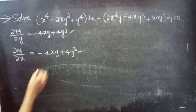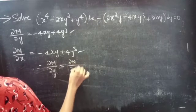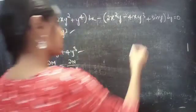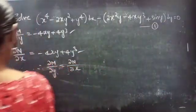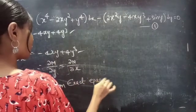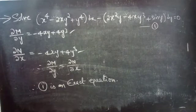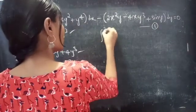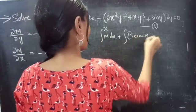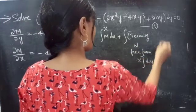Therefore, ∂M/∂y = ∂N/∂x. Since ∂M/∂y equals ∂N/∂x, the given differential equation is an exact equation. So equation 1 is an exact equation. The general solution of this exact equation is given by: ∫(over x) M dx + ∫(terms of N free from x) dy = c.